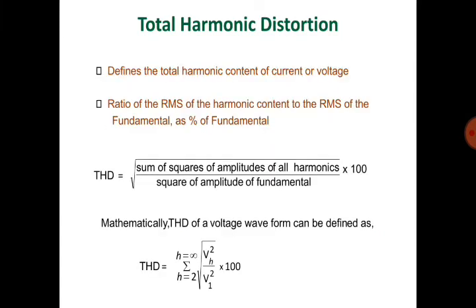Total Harmonic Distortion (THD) defines the total harmonic content of the current or voltage. It is the ratio of the RMS of the harmonic content to the RMS of the fundamental, expressed as a percentage. THD equals the square root of the sum of squares of the amplitudes of all harmonics, divided by the square of the amplitude of the fundamental, multiplied by 100. Mathematically, THD = √(Σ Vh² from h=2 to ∞) / V1 × 100.